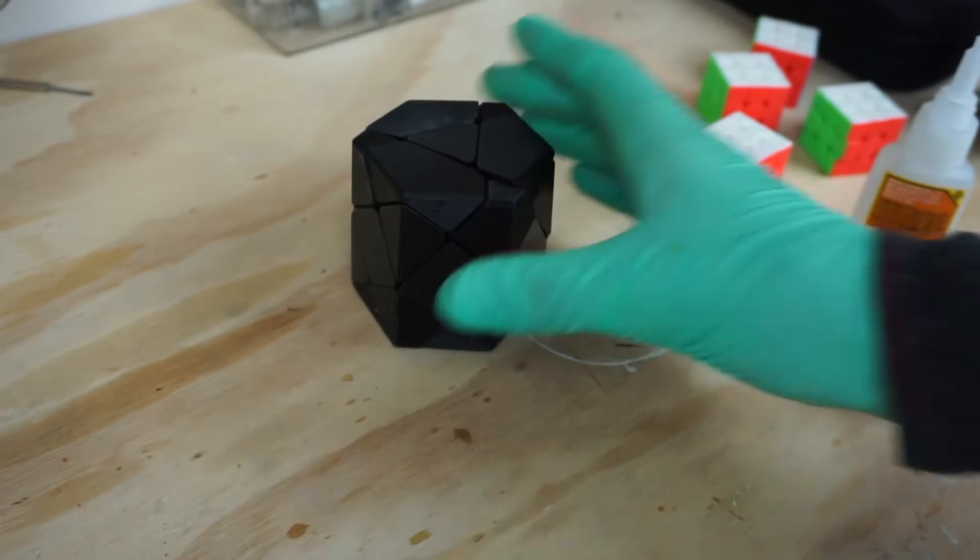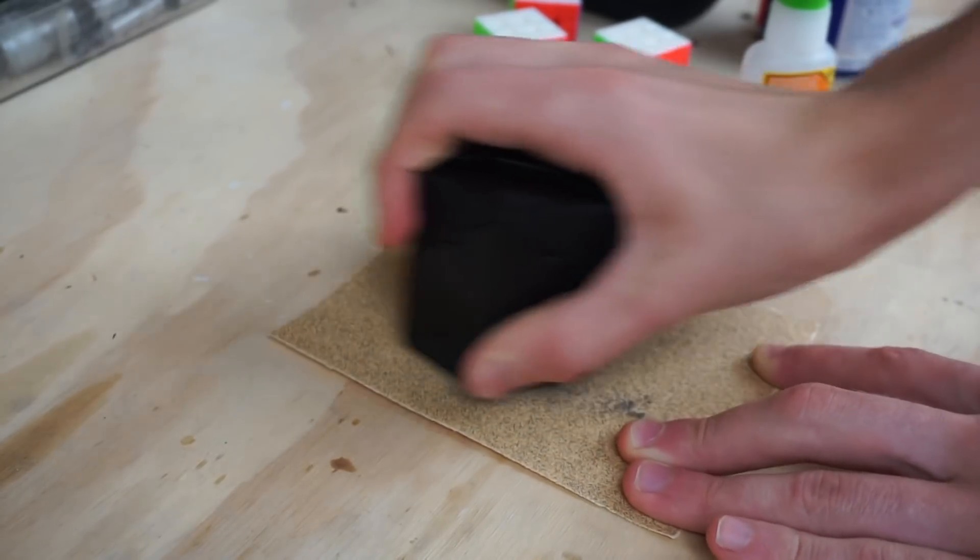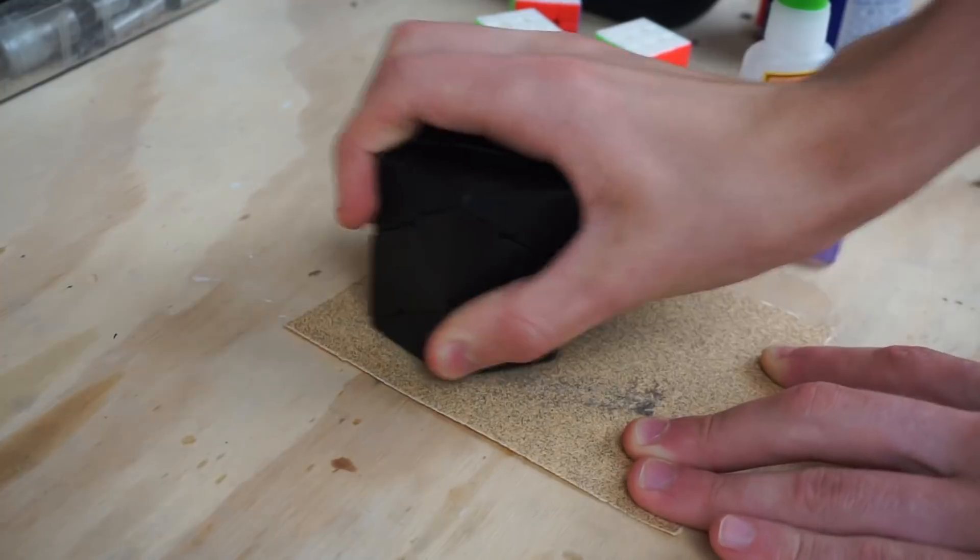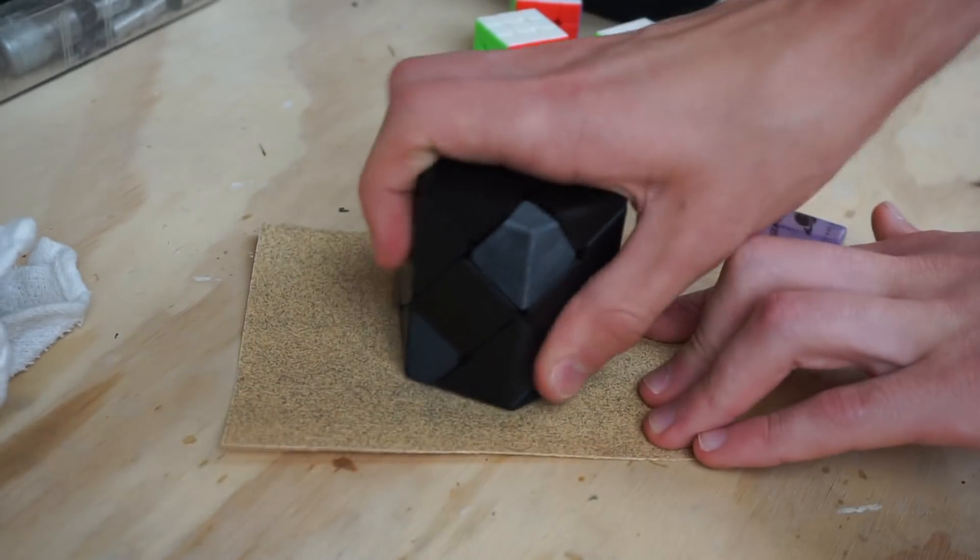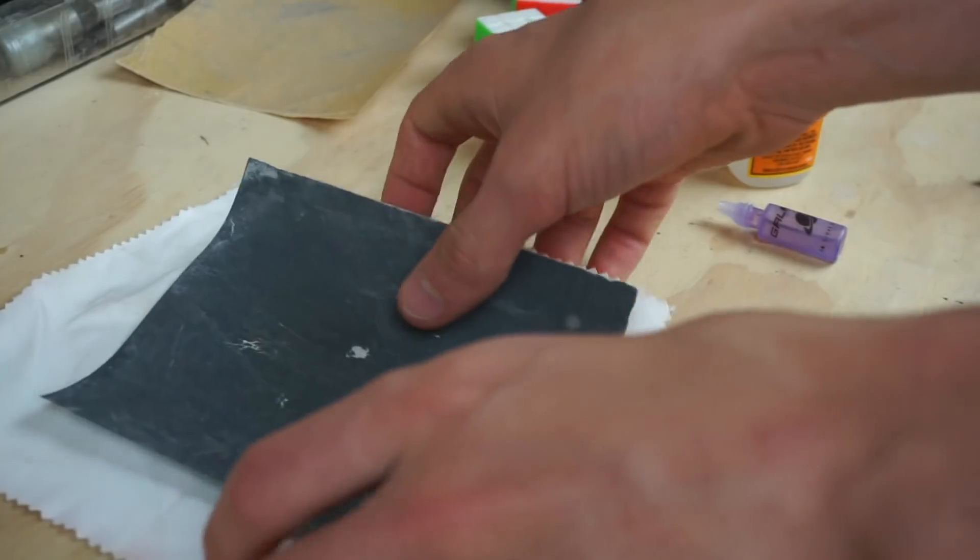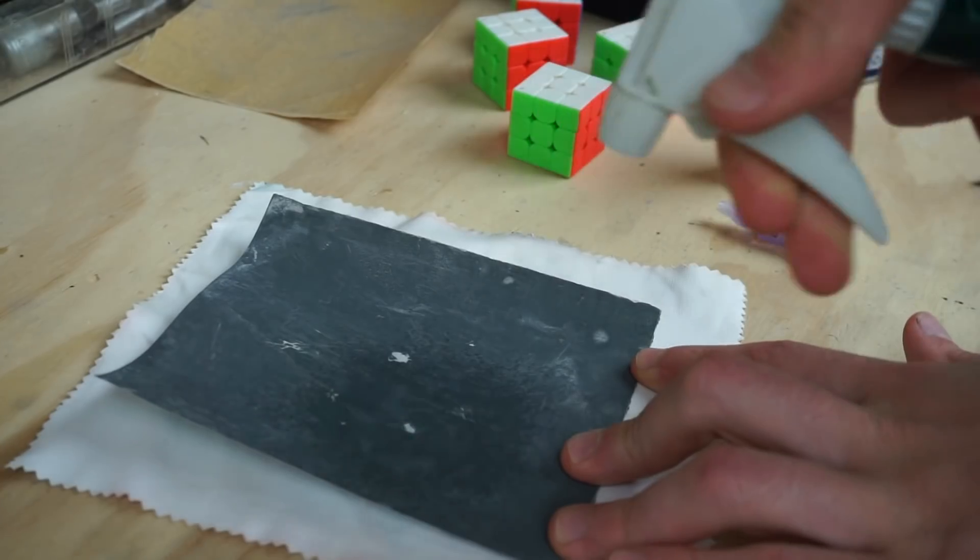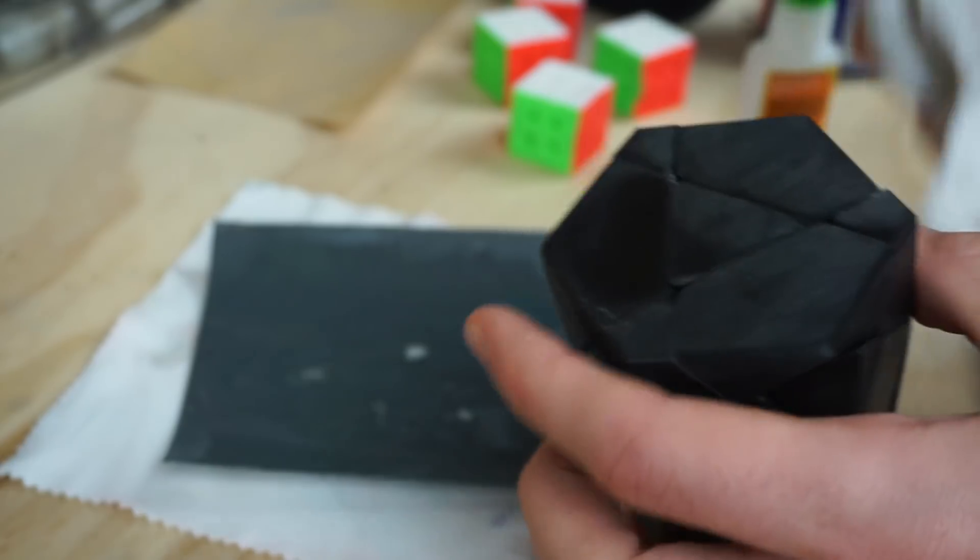After I glued all the extensions onto the core or the mini 3x3, I started sanding the faces. Initially I put them and sanded them like this, holding the puzzle and then holding this sandpaper in place and moving the puzzle on top of it. But eventually I started just using the sandpaper and rubbing the sandpaper on the face.